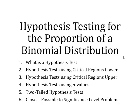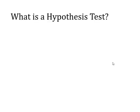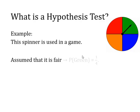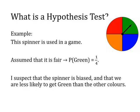So onto this first bit: what is a hypothesis test? I want you to imagine that we've got this spinner that's used in a game — a four-coloured spinner — and I expect most people's assumption would be that it's a fair spinner, i.e. that every colour has got a quarter chance of being selected. So in this case we could say the probability of getting green, as we've got here, is one-quarter.